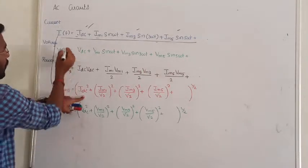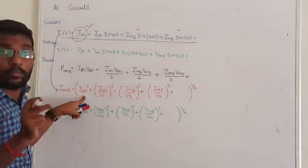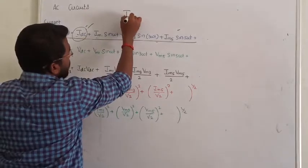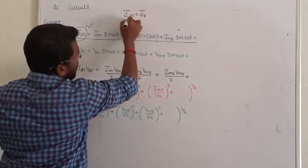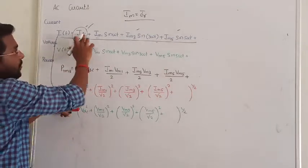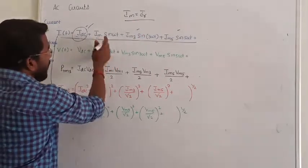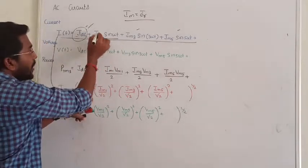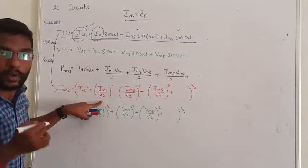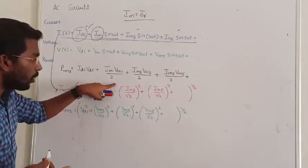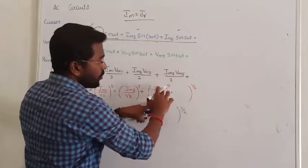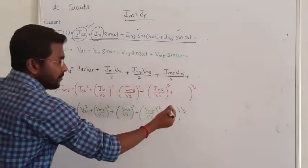I_RMS equals: first, I_DC — in DC, I_max and I_RMS are always equal. Then for AC components, you divide by root 2. So: I_RMS = sqrt( I_DC² + (I_M1/√2)² + (I_M3/√2)² + (I_M5/√2)² + ... ). Keep all these terms under the square root. This is the general formula for total RMS current.